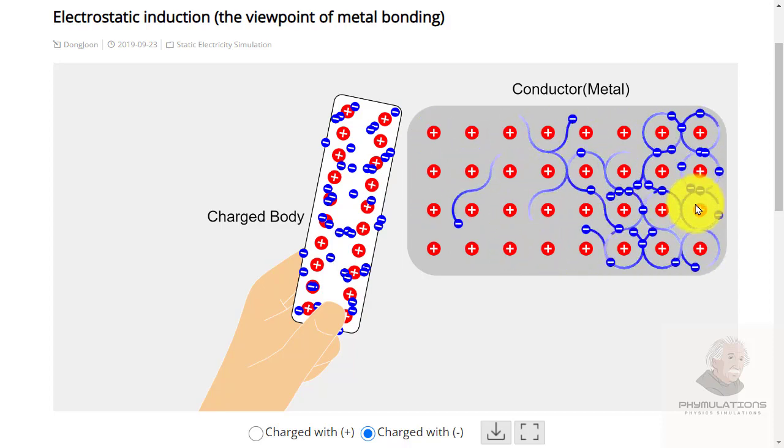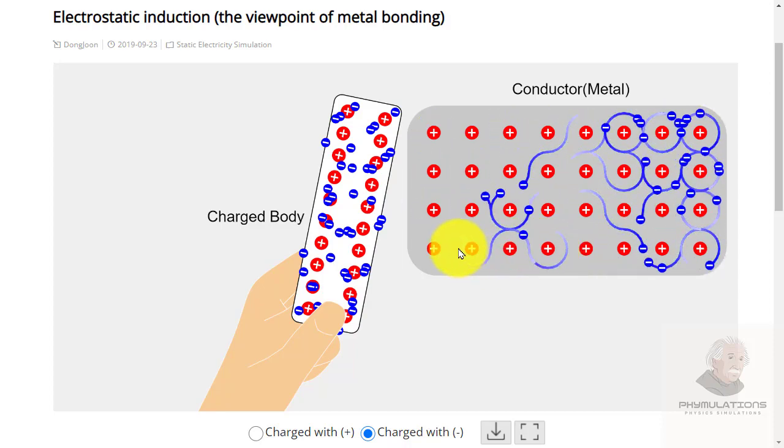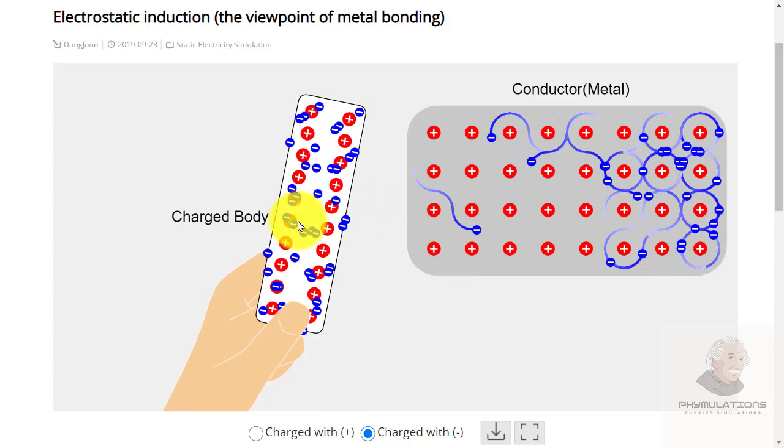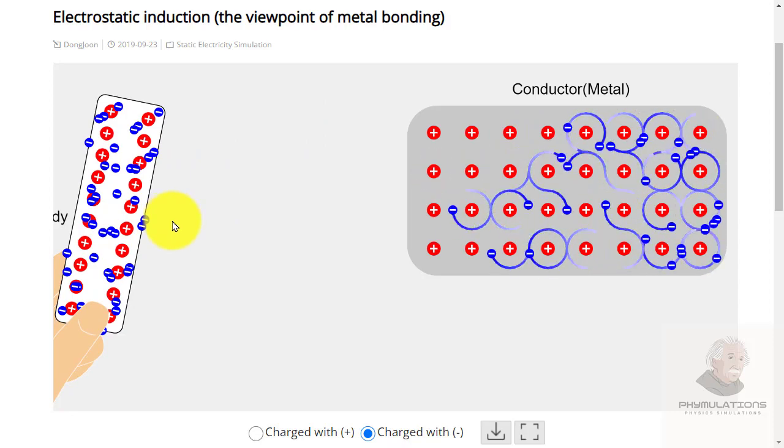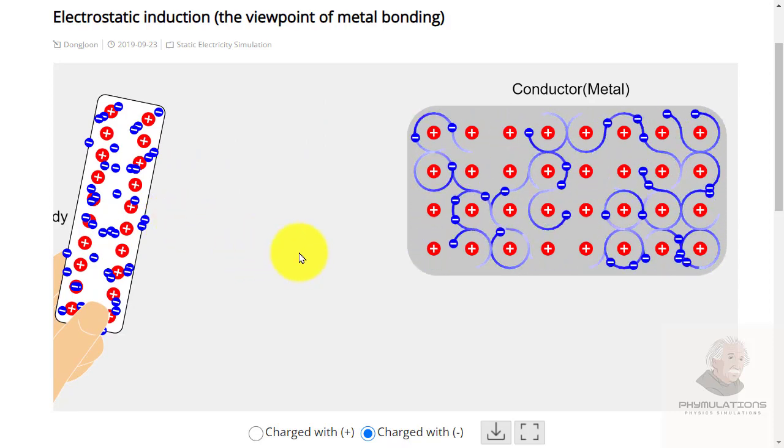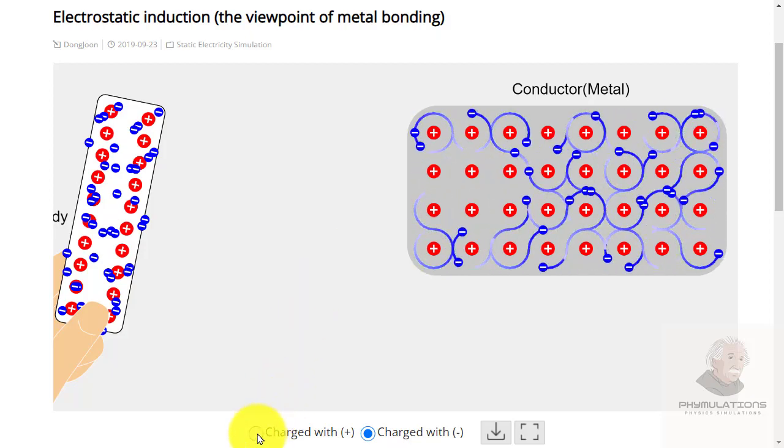We can say that the metal has polarized. This polarization will cause an attraction between the metal and the charged body. Now we just take it back and you will see that the electrons are again randomly moving in all directions.